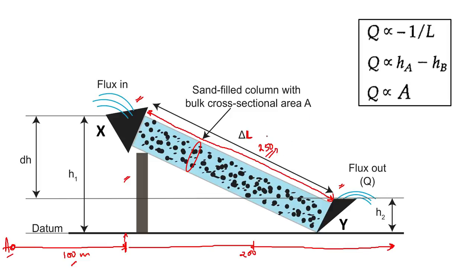Darcy found through his experiment that the discharge Q — also called the volumetric flow rate, or the volume of water flowing out per unit time — is inversely proportional to the length L. And Q is directly proportional to the head difference. So the more the difference between H1 and H2, the more will be the discharge.